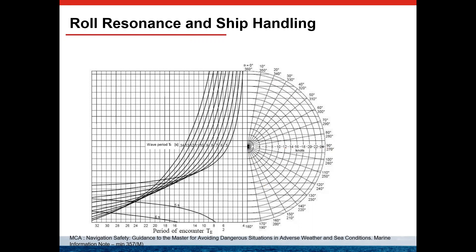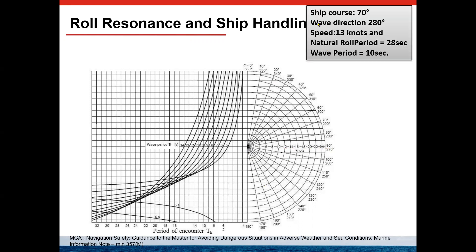We want to calculate whether the ship is in parametric rolling or synchronic rolling, so we need to identify the dangerous areas to be avoided. For this example: ship's course is 70 degrees, wave direction 280 degrees, speed 13 knots, natural rolling period 28 seconds, and wave period 10 seconds. The ship is a heavy lifter of 148 meters with a breadth of 28 meters.